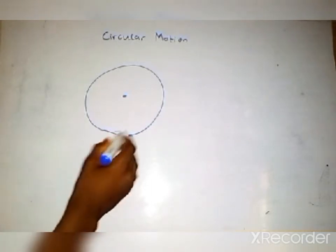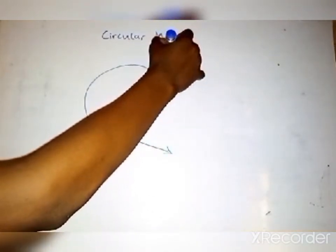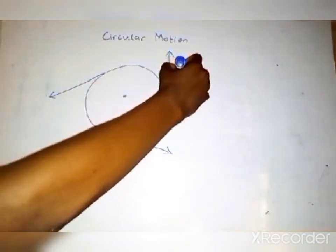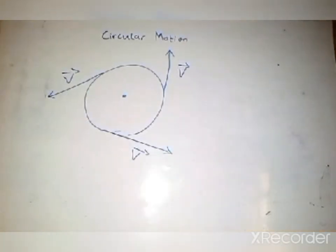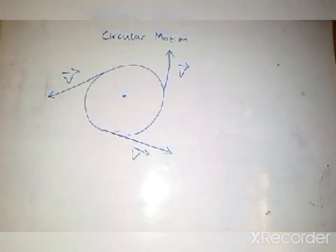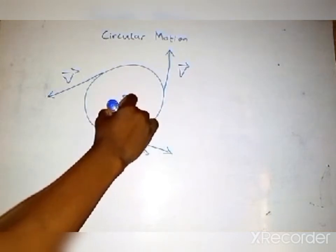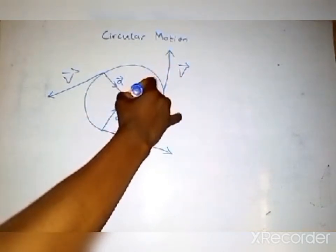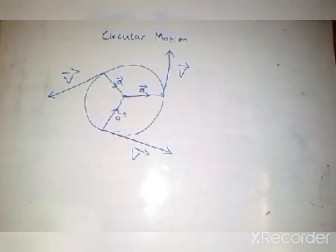The velocity here is a vector. We have the velocity at different points along the circle — they are all tangential. The speed remains equal at each place, but the direction changes. The acceleration is uniform, meaning it is constant in magnitude.